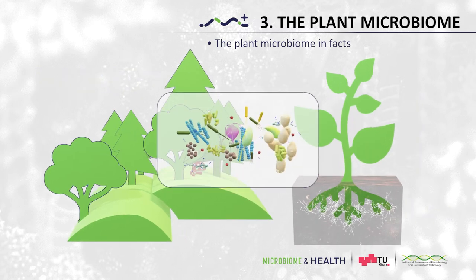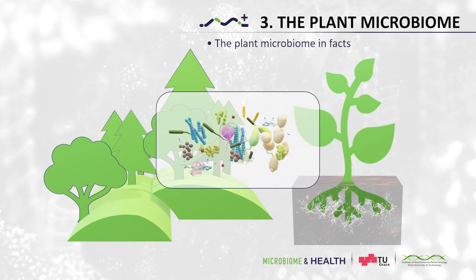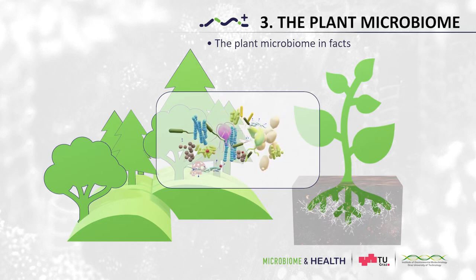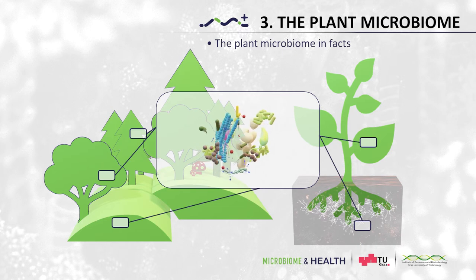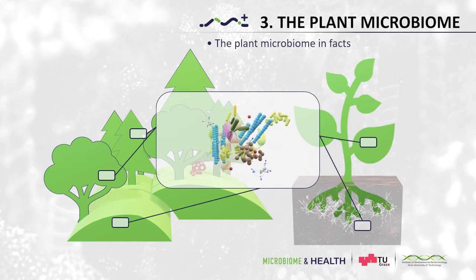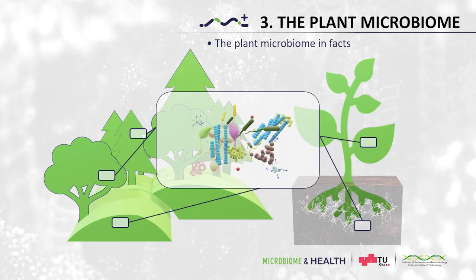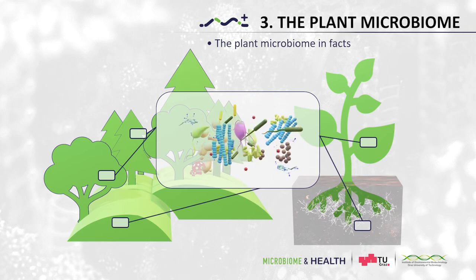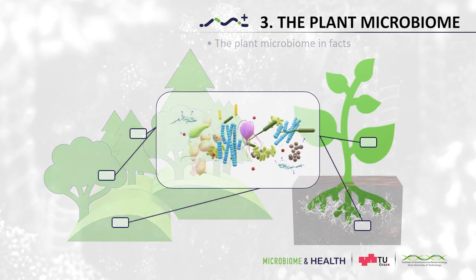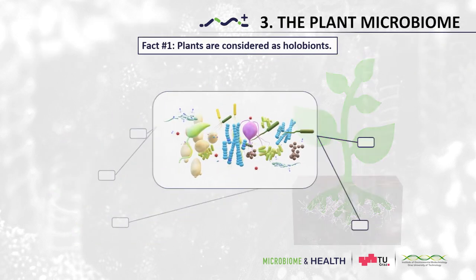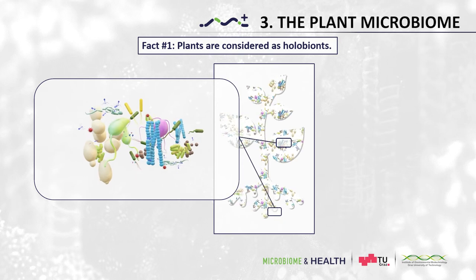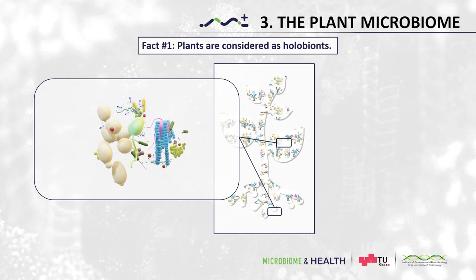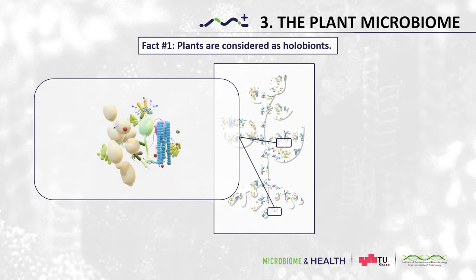Thanks to continuous developments in next generation sequencing, comparable key roles are nowadays suggested also for the entire plant microbiome, including bacteria, archaea, protists and viruses. Fact number one: plants are considered as holobionts. The same applies also for all remaining higher organisms such as humans, animals and insects.